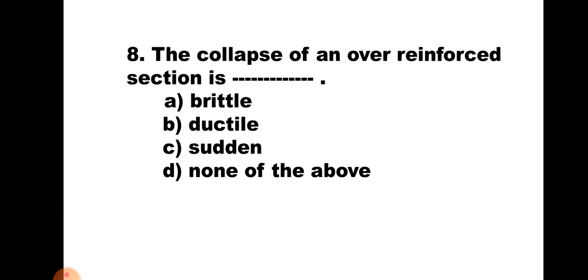Question number 8: The collapse of an over-reinforced section is: A. Brittle, B. Ductile, C. Sudden, D. None of the above. For an over-reinforced section, concrete reaches its ultimate strain first and it suddenly fails without giving any early intimation of failure. Hence, the answer is C. Sudden.